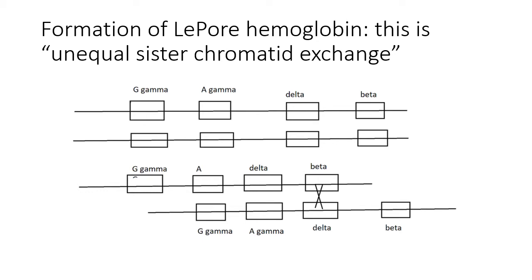The two loci are supposed to have G gamma, A gamma, delta, and beta. The delta and the beta are similar to one another because they're both beta globins. You can have misalignment of those chromatids in mitosis or meiosis such that the beta and the delta will line up with each other and undergo recombination. That leads to loss of information from one chromosome and gain of information by the other, with sometimes bad effects.